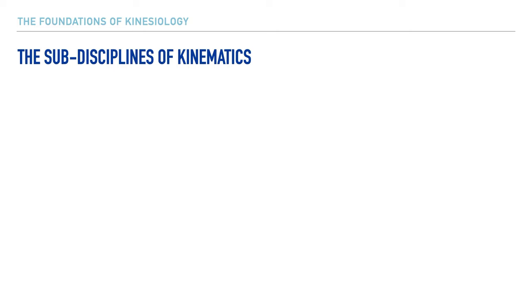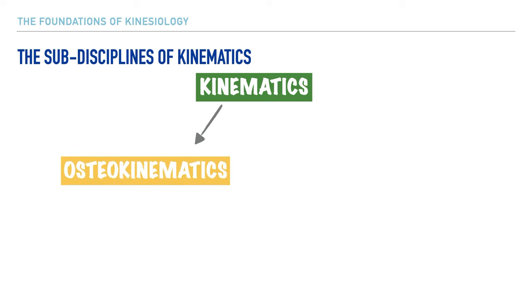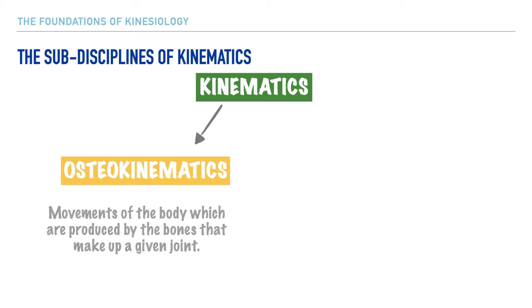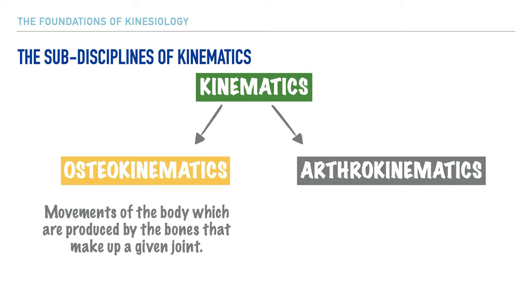Kinematics itself has subdivisions. The first is osteokinematics. The root word osteo refers to bone, and remembering that helps us recall that osteokinematics relates to movement of the body produced by bones that form a variety of joints.